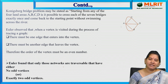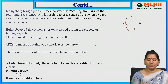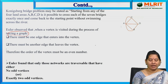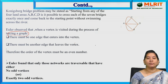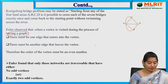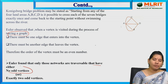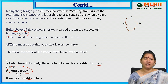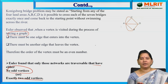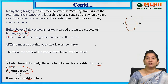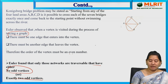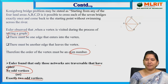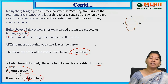Euler observed that when a vertex is visited during the process of tracing a graph, there must be one edge which enters the vertex and another edge which leaves it. Therefore, the degree of each vertex must always be an even number. Euler found that networks are traversable only when they have either no odd vertices or exactly two odd vertices.